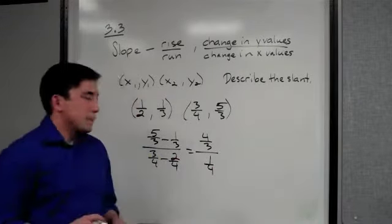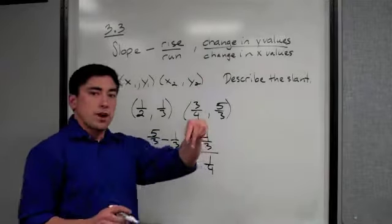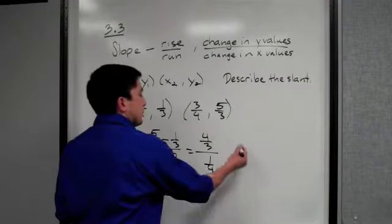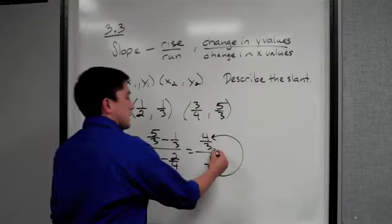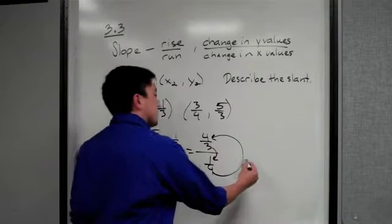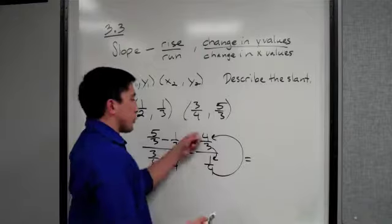Now when you subtract, you can say this is 1/4. The trick about a fraction over a fraction is that the bottom denominator swings up to the top and the top denominator swings down to the bottom, and it's by multiplication.